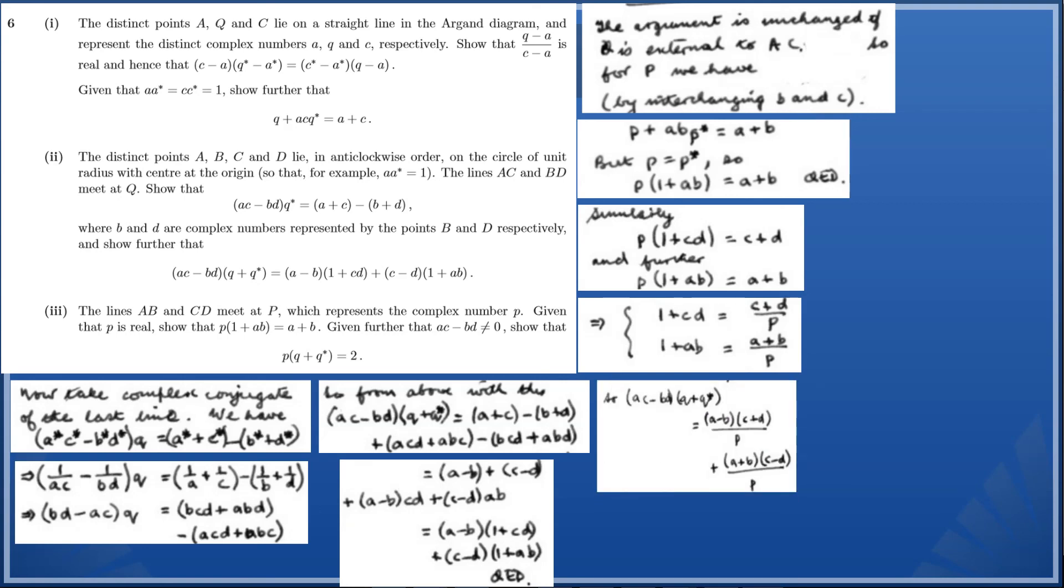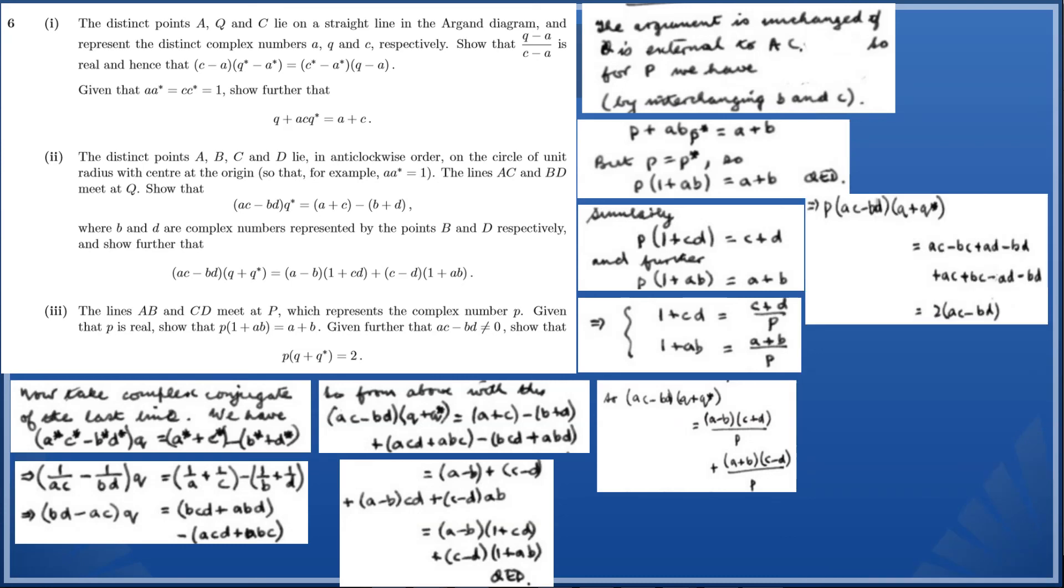And now what we need to do is simply combine these two different terms. Notice something very special: we can see that (ac-bd) appears on both sides of the equation, and it even gives us the information that ac-bd ≠ 0, which is good news because that means we can cancel out those terms. The next result very quickly follows: therefore p(q+q*) = 2 when ac-bd ≠ 0.